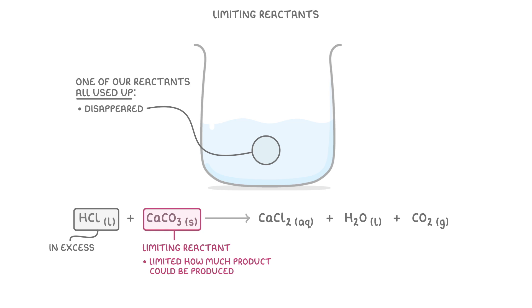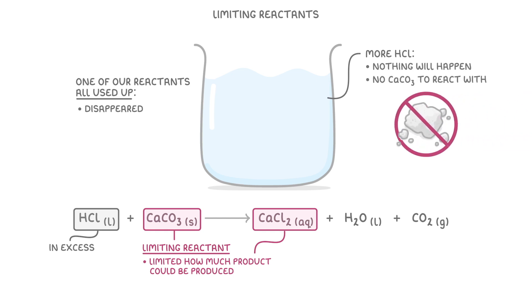The reason this is important is because how much product we get depends entirely on the limiting reactant. For example, if we add more calcium carbonate, we'll see more fizzing as more products are made. However, this fizzing would stop as the calcium carbonate is used up again. Whereas if we add some more hydrochloric acid, then nothing will happen because it has no calcium carbonate to react with.